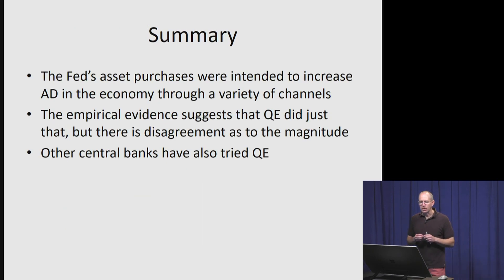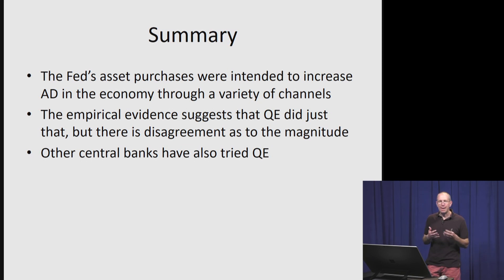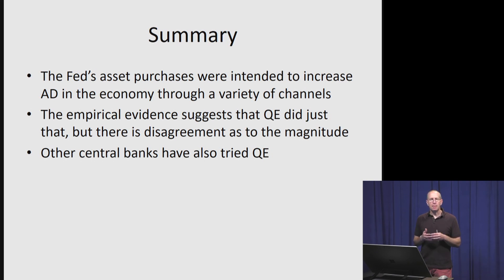In summary, the Fed's various asset purchases were intended to increase demand in the economy through a wide variety of channels. The empirical evidence confirms this did happen, though there is a wide range of disagreement on the magnitude. The general consensus is that the Fed was not able to fully offset the Great Recession but offset a reasonable fraction of it. Other central banks — such as the ECB (European Central Bank), the Bank of Japan (BOJ), and the Bank of England (BOE) — have all also engaged in their own various QE programs. Thank you very much.